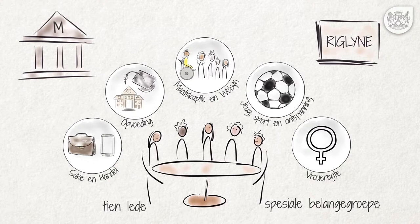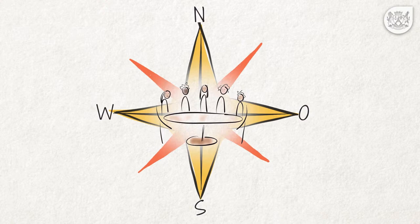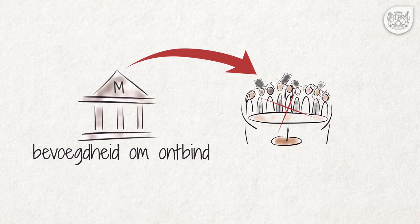Wykskomiteelede kan ook op 'n geografiese basis verkies word, byvoorbeeld een elk van die oostelike, die suidelike, die westelike en die noordelike dele van die wyk. Indien die wykskomitee nie sy verpligtinge nakom nie, het die munisipaliteit die bevoegdheid om die komitee te ontbind.